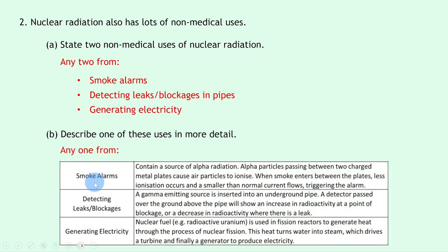For smoke alarms, we could say these contain a source of alpha radiation. Alpha particles passing between two charged metal plates cause air particles to ionize. When smoke enters between the plates, less ionization occurs and a smaller than normal current flows, triggering the alarm.